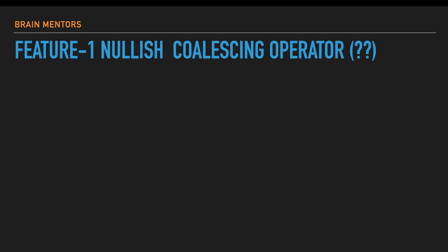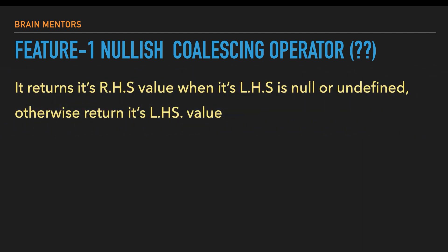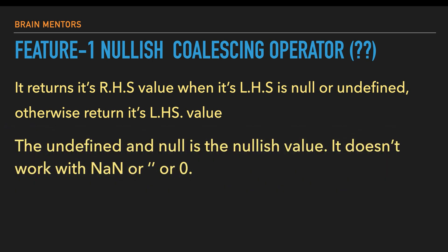Feature number one is the Nullish Coalescing operator, and for this we use the double question mark sign. This operator returns the right-hand side value when its left-hand side value is null or undefined, otherwise it returns the left-hand side value. It only works with null and undefined — not with NaN, blank values, or zero.